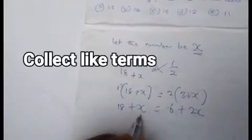Collect like terms. So we have x here. If 2x is crossing, the sign will change to minus 2x. We have 6 and 18 is crossing.